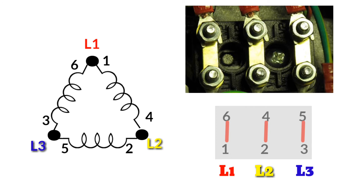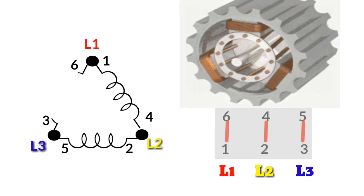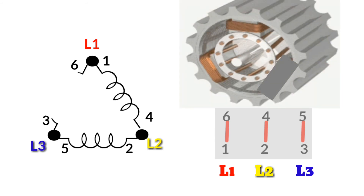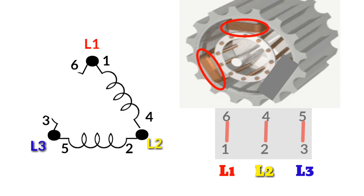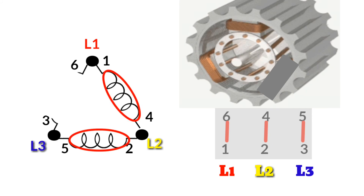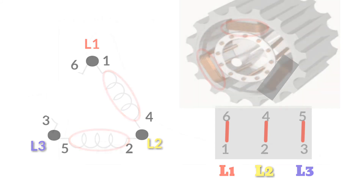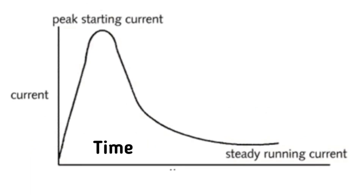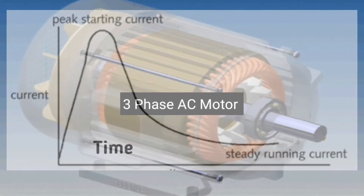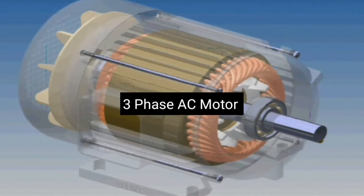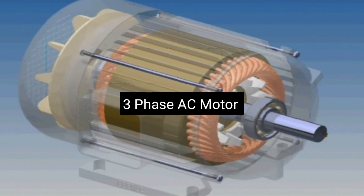An advantage of the delta connection is higher reliability. If one of the three primary windings fails, the secondary will still produce full voltage on all three phases, provided the remaining two phases can carry the load. The delta connection in a motor is used because it provides more power and starting torque, but the starting current is high. The star connection is used to reduce the starting current to get the motor up to speed, and then connect in delta for normal running mode.